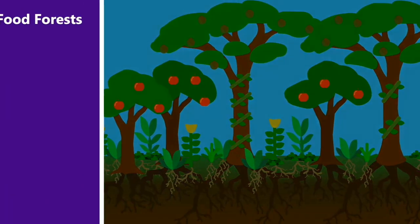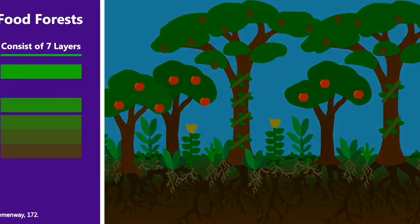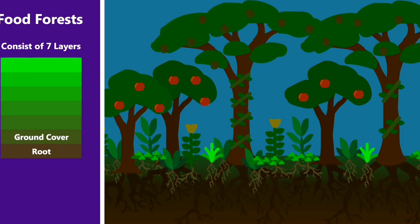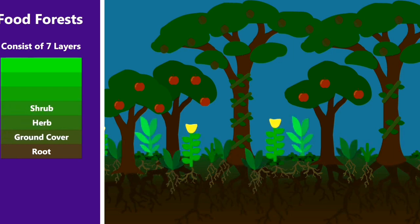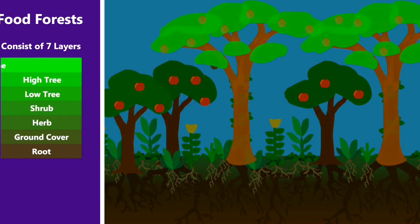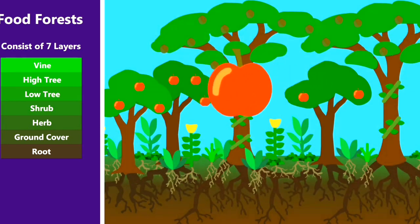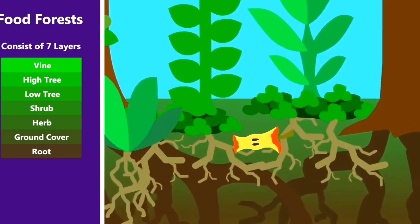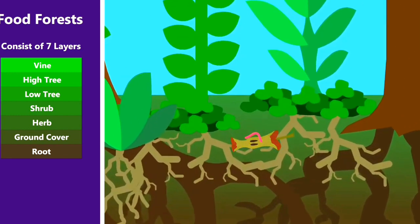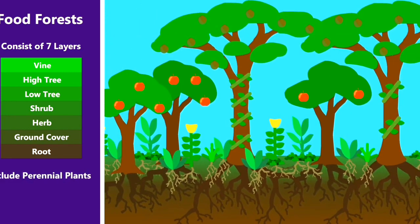Food forests are often thought of as comprising seven layers: the root layer, the ground cover layer, the herb layer, the shrub layer, the low tree layer, the high tree layer, and the vine layer. Every one of these layers either produces some sort of food or medicine, or is in some way helpful to the system as a whole. The plants are mostly perennials and include as many native species as possible.